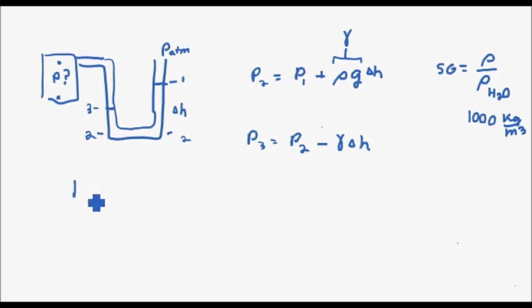The pressure at position three is going to equal the pressure at position one plus this change in elevation. So the gauge pressure would be the specific weight times delta Z.